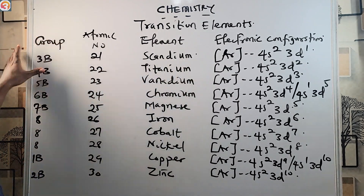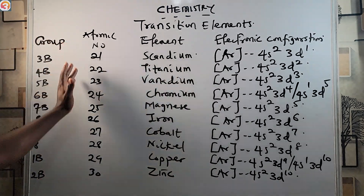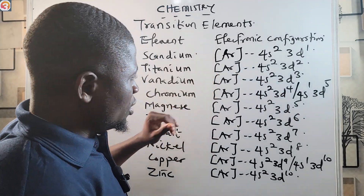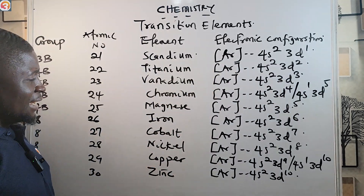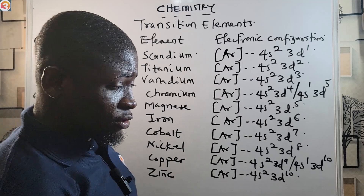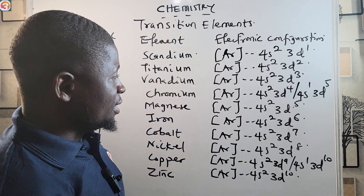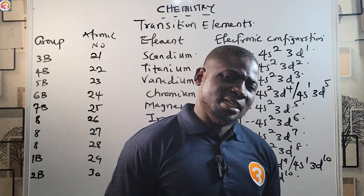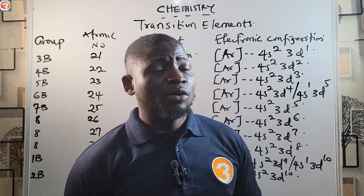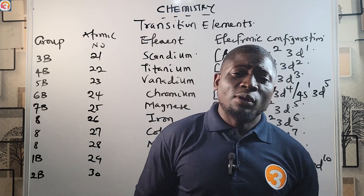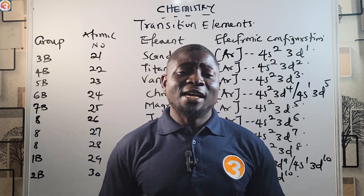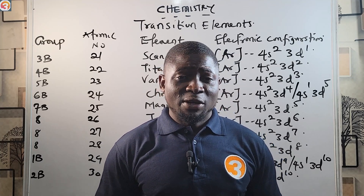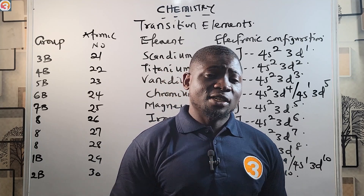So those are the first 10 transition elements — their group distribution, atomic numbers, and electronic configurations. As mentioned, transition elements are called d block elements because the outermost electrons reside in the d orbital. In the next class we will finish the last part of the periodic table: the actinide and lanthanide series. Thanks for watching.